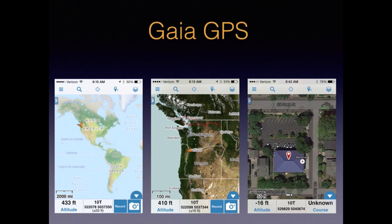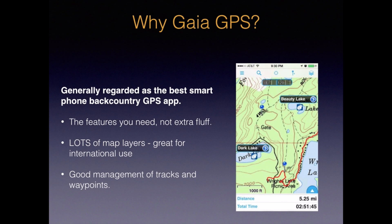Now let's move to smartphones. Currently, the best available phone app for backcountry use is Gaia GPS. For a mere cost of $20, it turns your smartphone into a GPS receiver that, in many ways, is superior to a top-of-the-line, dedicated GPS. Gaia is at the top for several reasons: it's focused on backcountry use, not for driving or sharing hike statistics on social media; it has lots of different map layers to choose from, like satellite and open-source maps, letting you select exactly the type of coverage you need for your trip.